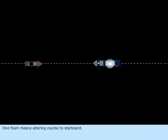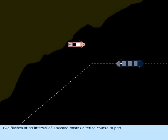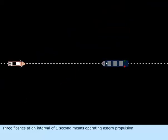One flash means altering course to starboard. Two flashes at an interval of one second means altering course to port. Three flashes at an interval of one second means operating a stern propulsion.